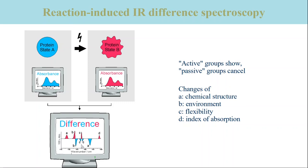In this case, the intensity will decrease on the sides of the band but will increase at the center if the absorption coefficient remains constant. This leads to a positive band with negative side lobes. As the band width is a measure of conformational flexibility, a decrease in band width indicates a more rigid structure in the product state B.